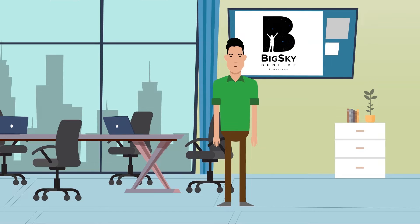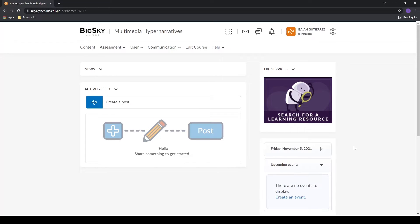This video will teach you how to export Big Sky courses and course components. In the course homepage of your old course or sandbox, click the gear icon on the top right corner and click Import, Export, Copy Components under Organization Related.